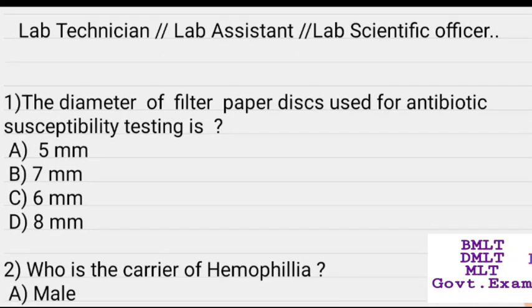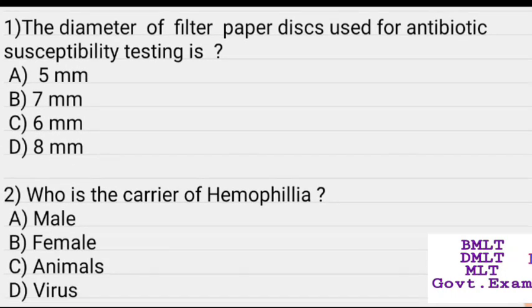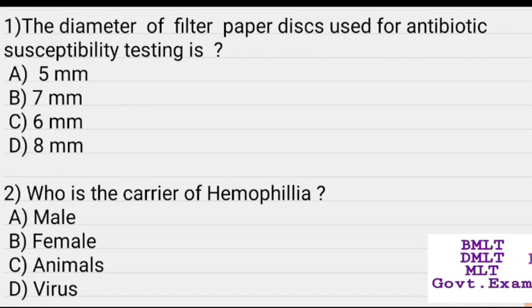First Question: What is the diameter of the filter paper disk used for antibiotic susceptibility testing? Answer: 6 mm.